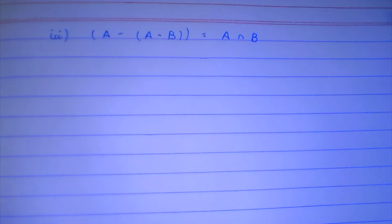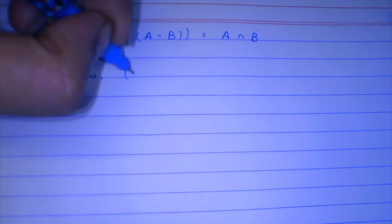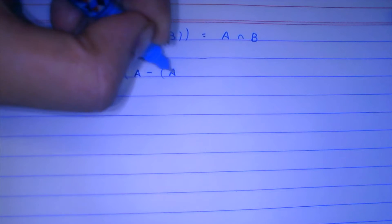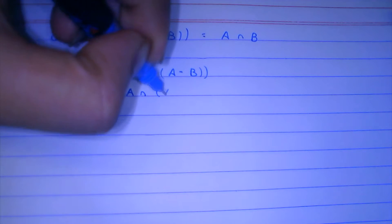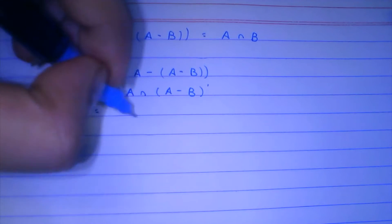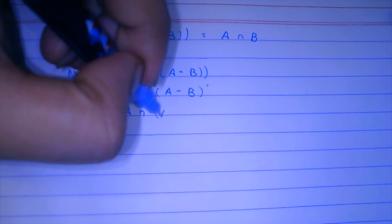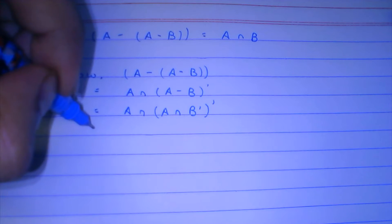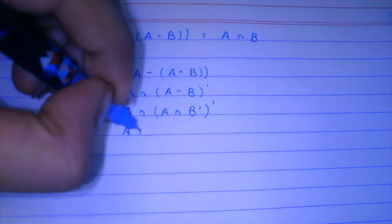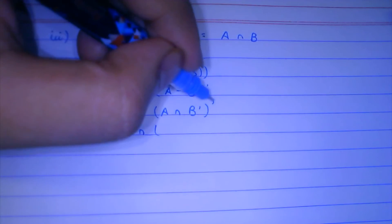Moving to the third identity: we need to prove that A minus (A minus B) is equal to A intersection B. We take the LHS: A minus (A minus B), which is equal to A intersection (A minus B) whole complement. Expanding further, this comes out to A intersection (A intersection B complement) complement.